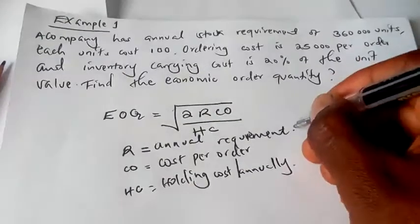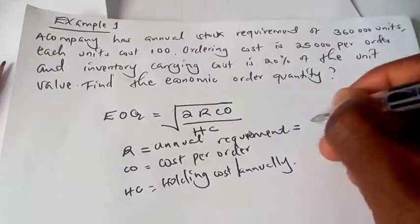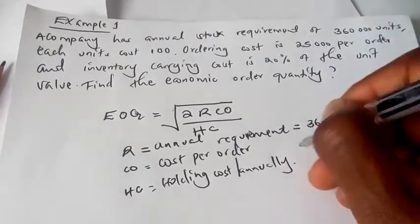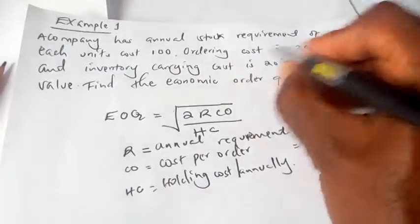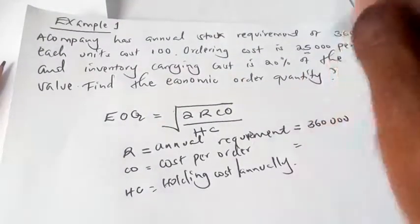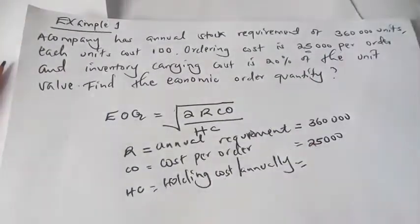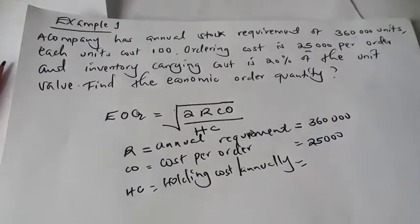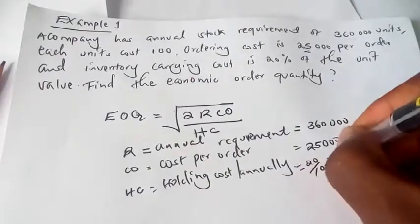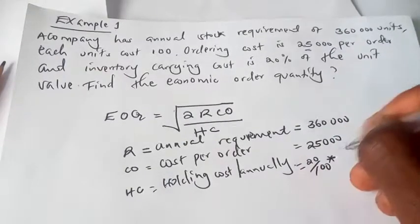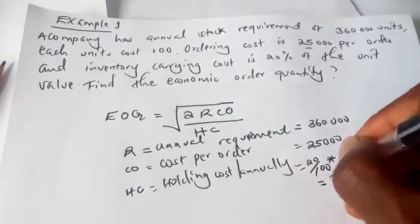So my R is equal to 360,000 units. Cost per order is 25,000, while the holding cost is 20% of the price. And my price is 100, which will give me 20.